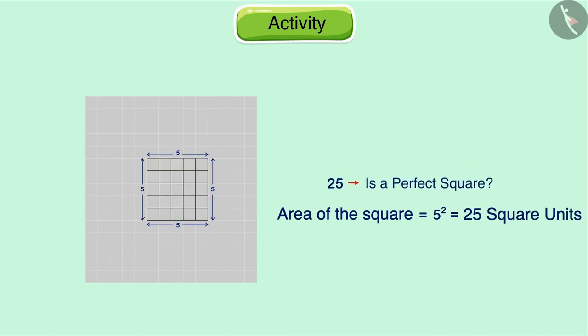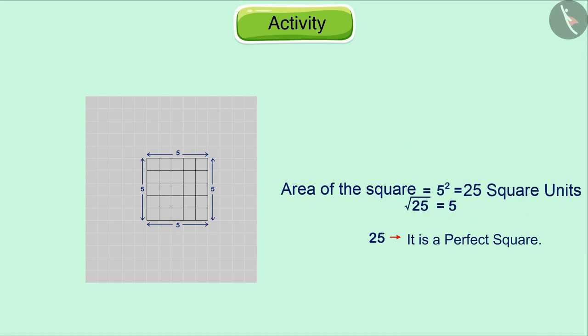From this, we can find that the number 25 is a perfect square whose square root is 5. The sides of this square are equal to 5 units because the square root of 25 is 5. Let's go ahead.